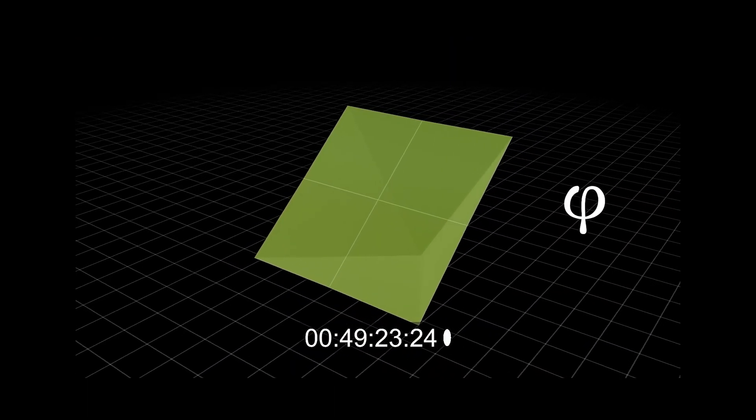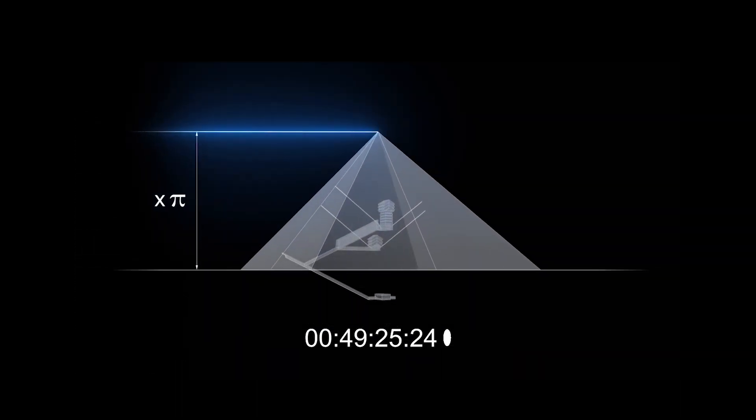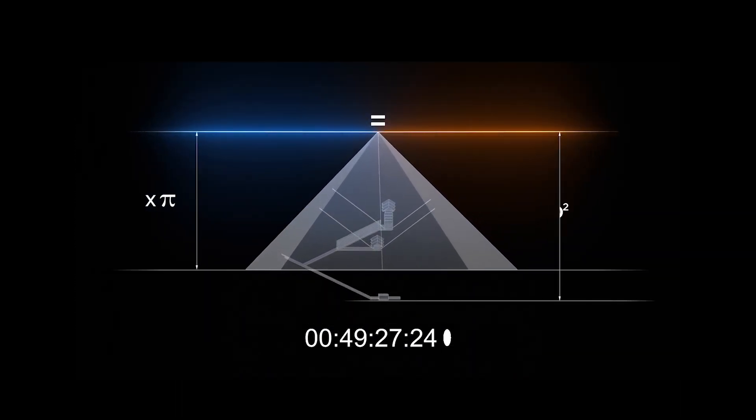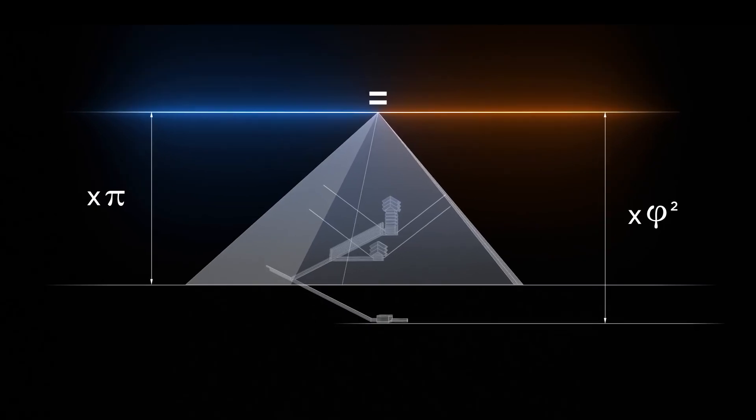As we previously mentioned, we note the presence of these two numbers that the Egyptians were not supposed to know. Ah yes, Pi and Phi.